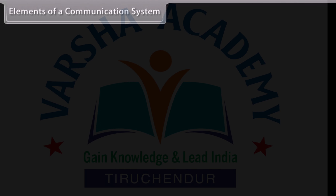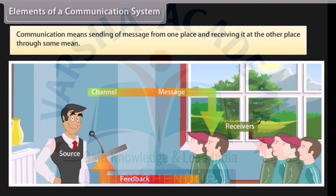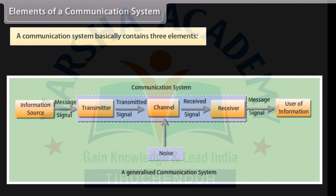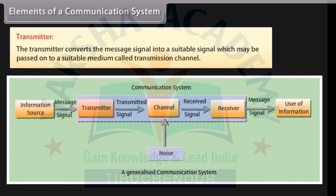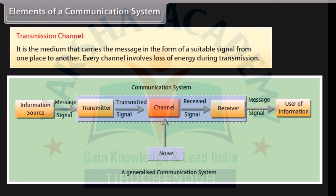Elements of a communication system: Communication means sending of a message from one place and receiving it at the other place through some mean. A communication system basically contains three elements. The transmitter converts the message signal into a suitable signal which may be passed on to a suitable medium called transmission channel. The transmission channel is the medium that carries the message in the form of a suitable signal from one place to another. Every channel involves loss of energy during transmission.